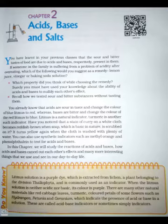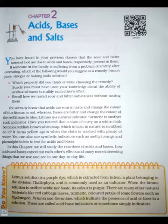Table 2.3 shows some naturally occurring acids: Vinegar — acetic acid; Sour milk/curd — lactic acid; Orange — citric acid; Lemon — citric acid; Tamarind — tartaric acid; Ant — methanoic acid; Tomato — oxalic acid; Nettle sting — methanoic acid. Now, practice questions: You have two solutions A and B. The pH of solution A is 6 and pH of solution B is 8. Which solution has more hydrogen ion concentration? Which of these is acidic and which is basic?